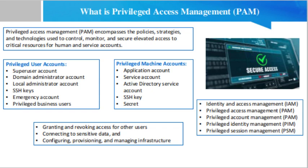Begin by defining rules for users and outlining required privileges and access rights for those roles. Remember to limit access by scope as well as time — DevOps admins need different permissions than summer interns, and privileges change when people leave or change roles within the company. Next, consider which systems you would need to recover first in the event of an attack — those containing sensitive data, high-level permissions, and the ability to configure and access other systems.